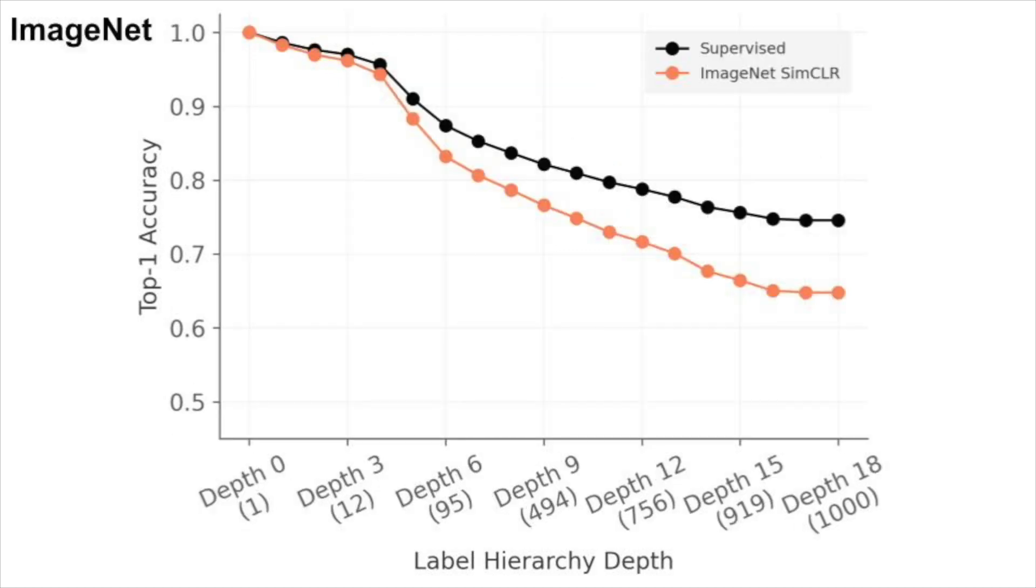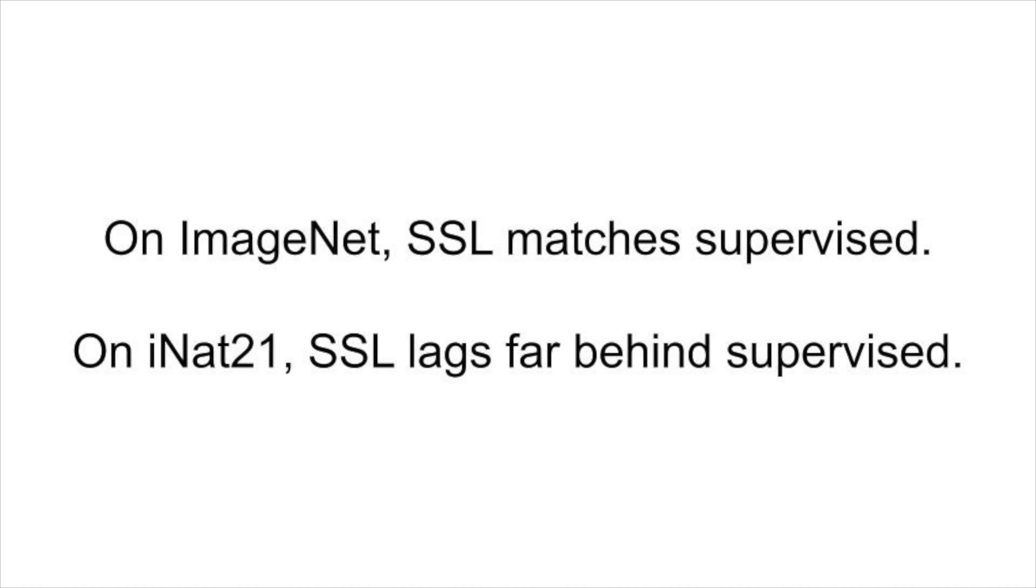We see the same general pattern for ImageNet when we use the standard WordNet hierarchy, but the gap between supervised and self-supervised grows less rapidly. On ImageNet, self-supervised learning matches supervised. On iNat21, self-supervised learning lags far behind.